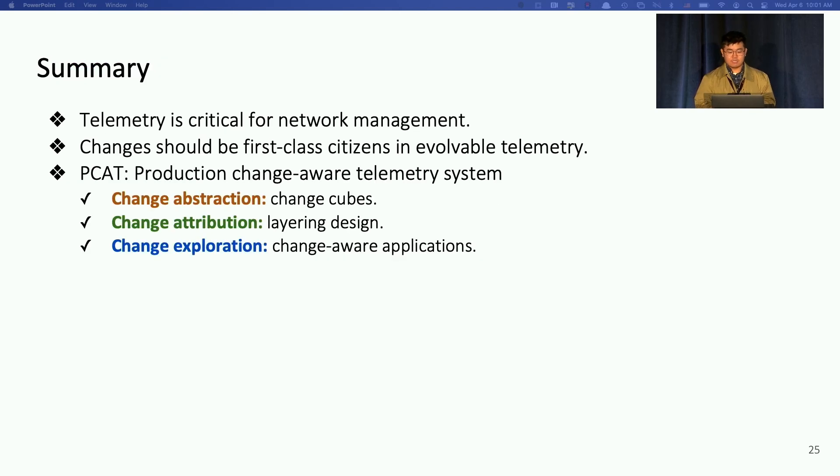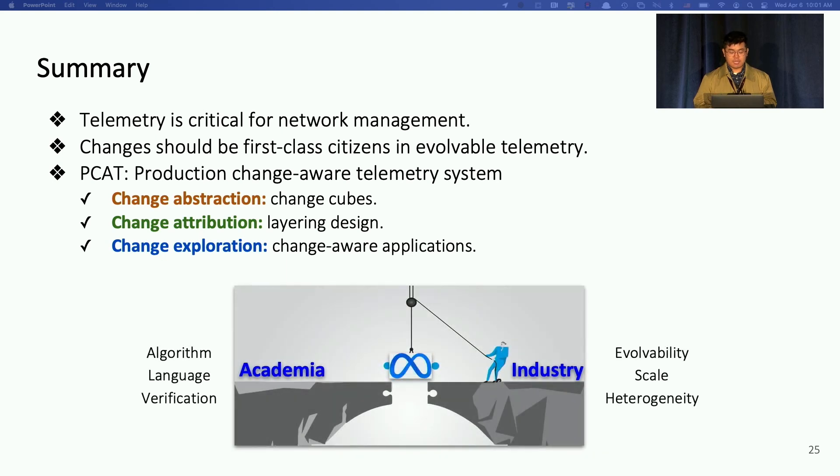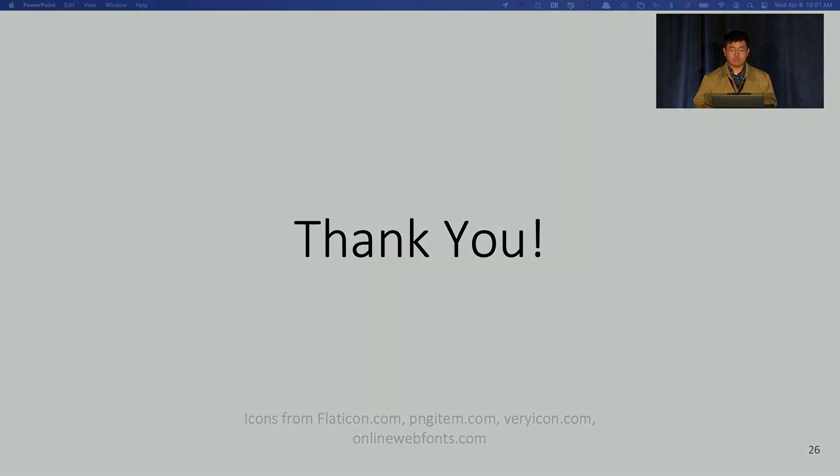To summarize, telemetry is critical for network management, while changes should be the first-class citizen in an evolvable telemetry system. PCAT proposed a change-cube abstraction, adopts a layering design, and enable change-aware applications. But there are still some gaps of telemetry between industry and academia. We call for researchers on the adaptivity and validation of telemetry. That ends my talk. Thank you.